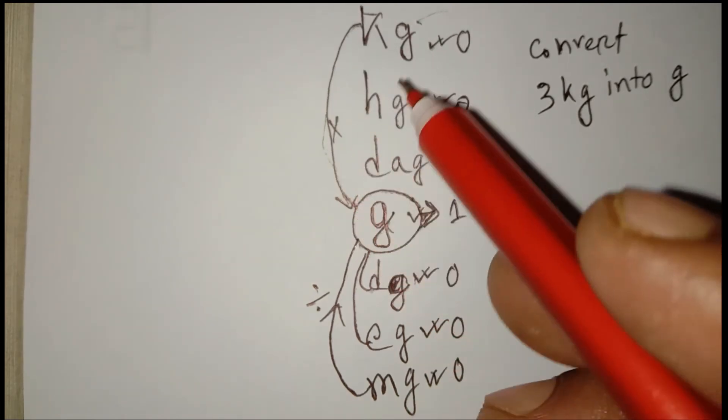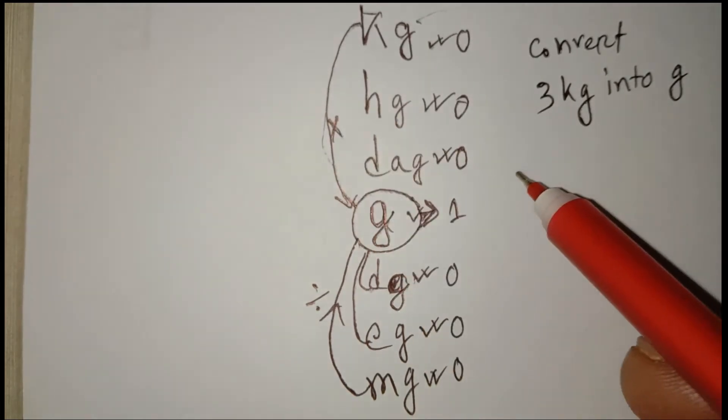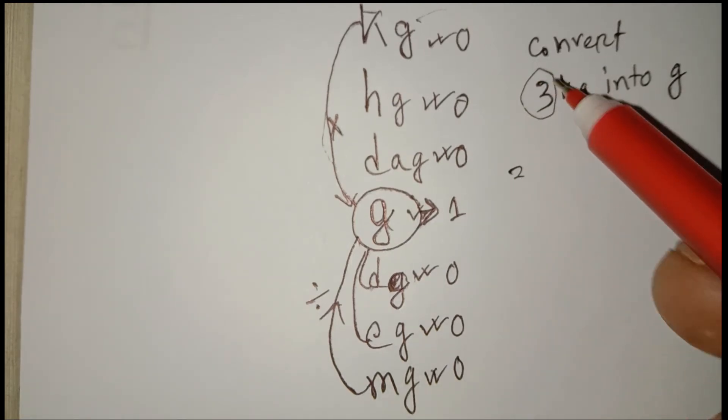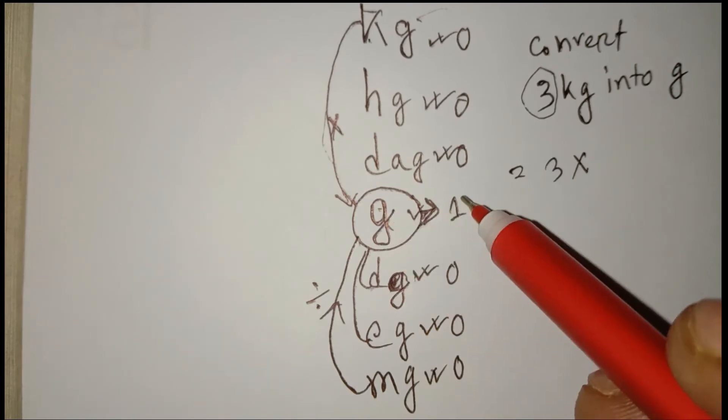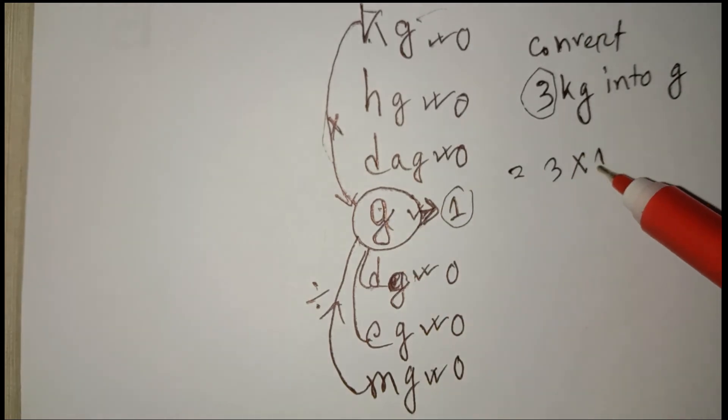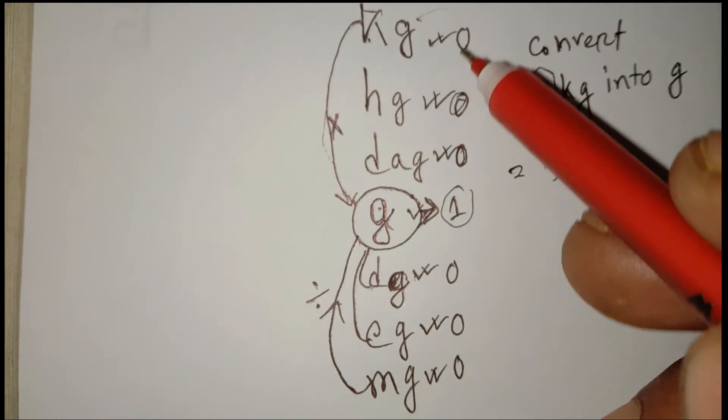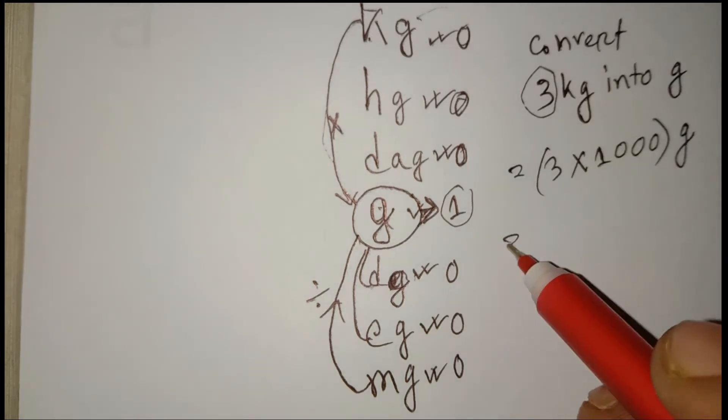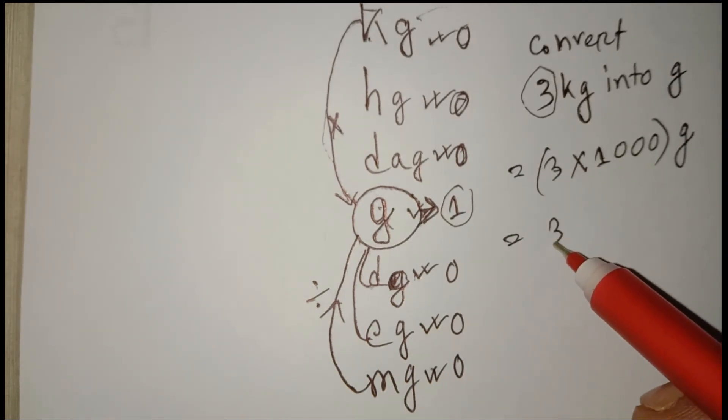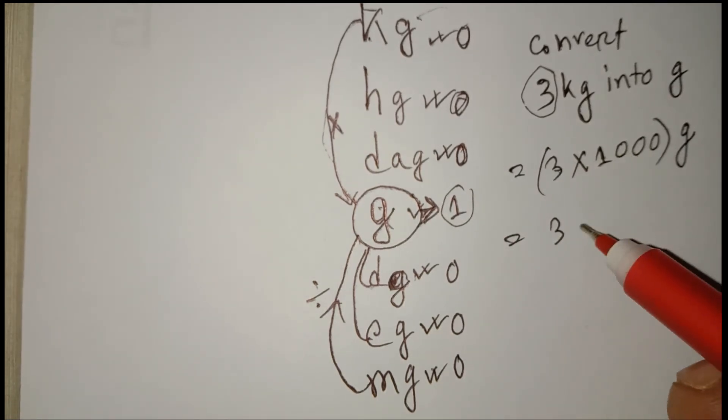Kilogram into gram, so we multiply. Here our value is 3. Multiply kilogram into gram—that means 1-0, 2-0, 3-0. So 3 multiplied by 1000 equals 3000 gram. This is a simple way.